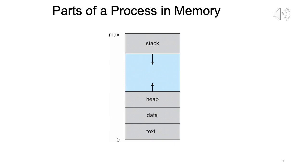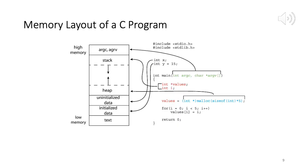Now on slide 8, Parts of a Process in Main Memory. This is an executing program. At the bottom is the text section which contains your code. Then you have the data section which has global variables. Then you have the dynamically increasing stack and heap — stack for temporary data, heap for dynamically allocated memory. These are the parts of a process. Whenever a process is brought from disk to main memory, it is assigned a certain amount of main memory and that memory becomes the process's address space. Each process has an address space, from zero to max.